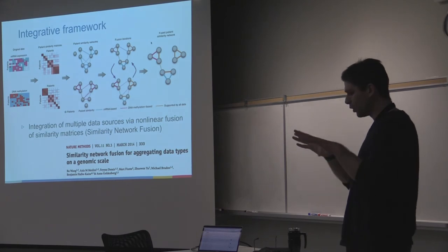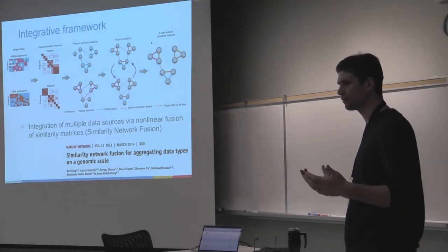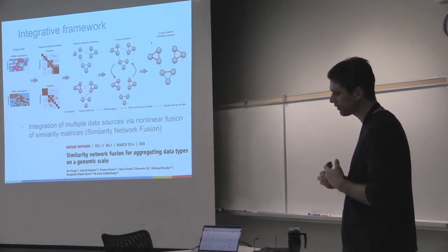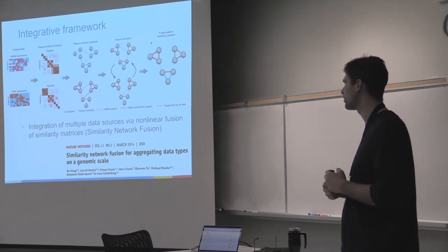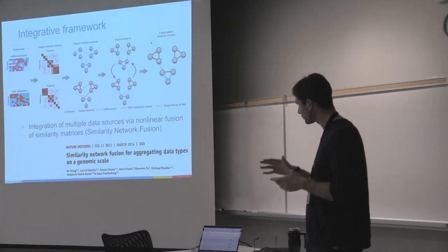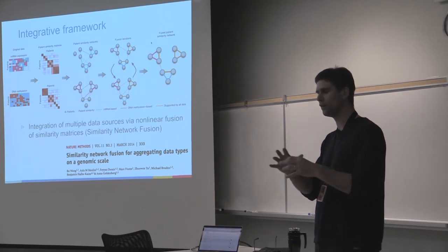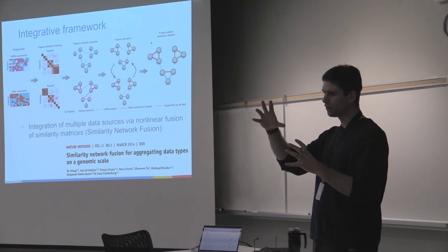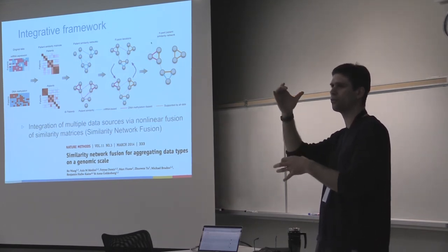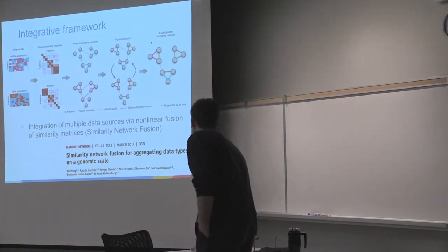Now we have drug-drug similarities for each layer separately, but that's not the most exciting part — people have done that for ages, one data type at a time, mostly with drug structure. What we wanted to do is use a method from Anna Goldenberg's lab published in 2014, which allows fusing different layers in a smart way. The Similarity Network Fusion method takes a local perspective — it considers the whole similarity around a given drug to fuse the different layers. If several layers agree, it strengthens the similarity; otherwise it kills it, in a regularized way.